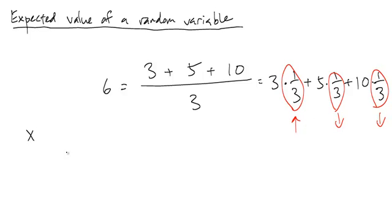then if I have a random variable X with probability table given by 3, 5, 10, and probabilities 1/3, 1/3, 1/3, then what I'm doing is taking each label, multiplying it by the weight here, repeating that for all of them, and then adding them up.